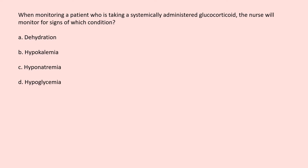When monitoring a patient who is taking a systemically administered glucocorticoid, the nurse will monitor for signs of which condition? A. Dehydration. B. Hypokalemia. C. Hyponatremia. D. Hypoglycemia.